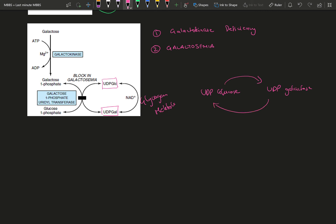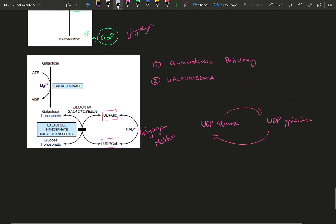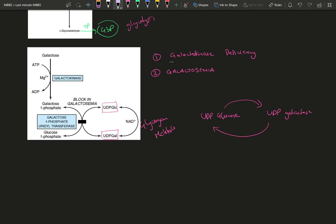And there are two deficiencies which you should know. One is galactokinase deficiency. Same thing as fructose, the fructokinase deficiency. There is not going to be any galactose within your body. And then galactosemia, which is accumulation of galactose in blood in the form of galactose 1-phosphate. And there is going to be accumulation of galactitol.